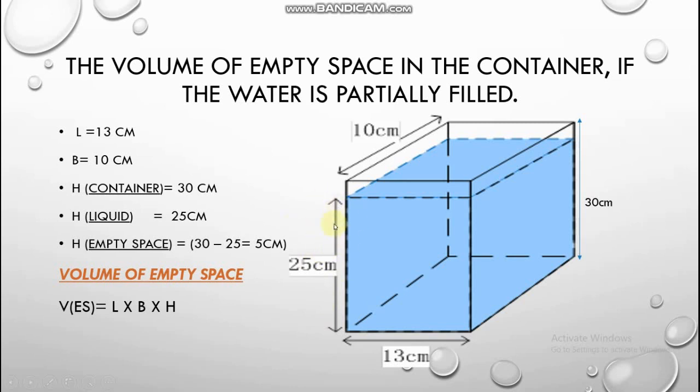So we can find the height of empty space by subtracting the height of water from height of container which will be 5 cm. Now simply by applying the formula and putting the values 13 into 10 into 5 cm we will get the volume which is 650 cubic cm. This is how we will find the volume of empty space. Alright that is for now.